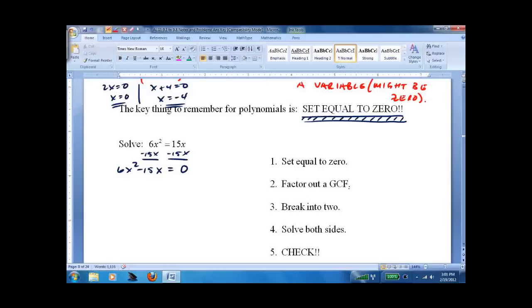Step two, factor out a GCF. Well, there's a 3 in both of these, and then there's an x. So, when I pull out 3x, I'm left with 2x minus 5.